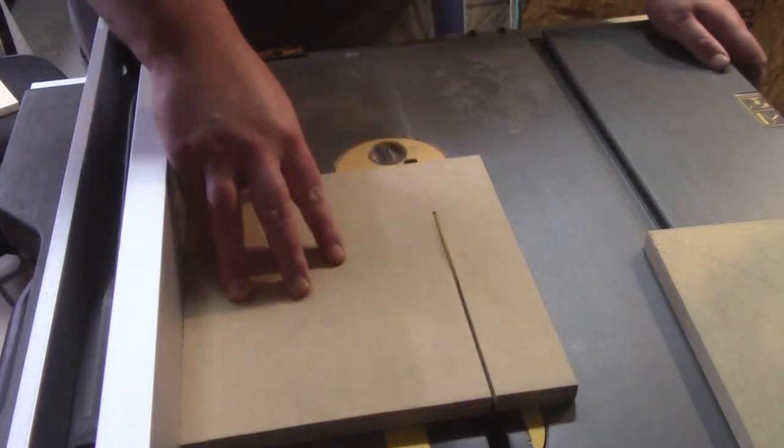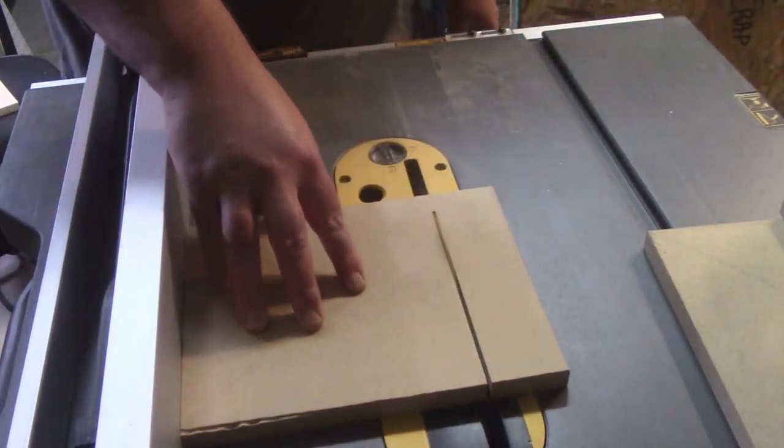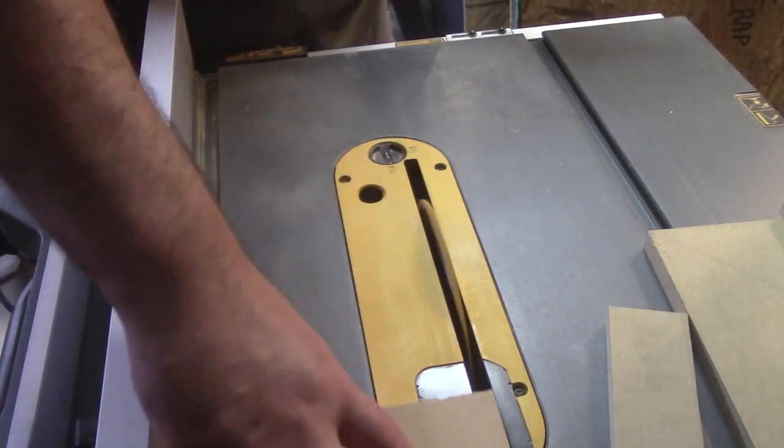So I started off by cutting the main piece of the body at those Dremel lines and then trimming it down to its final size on the table saw.